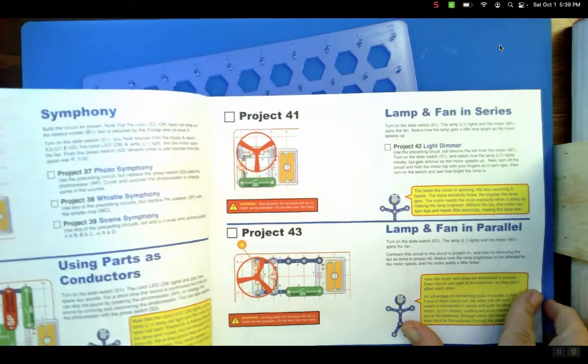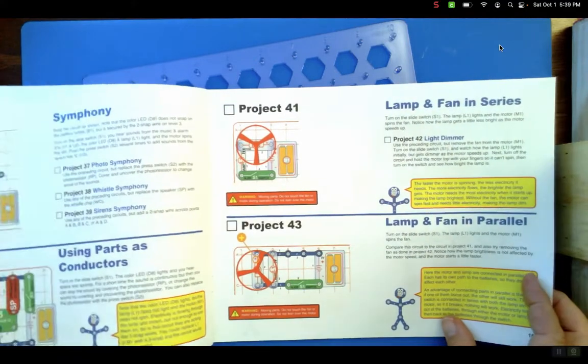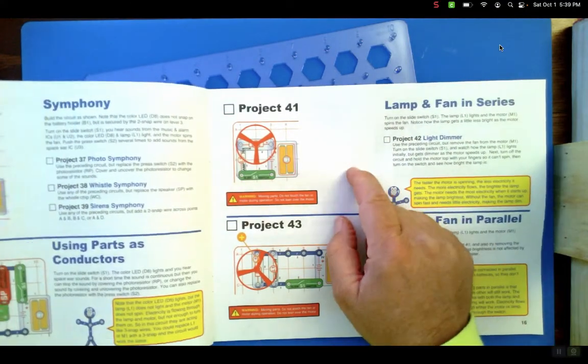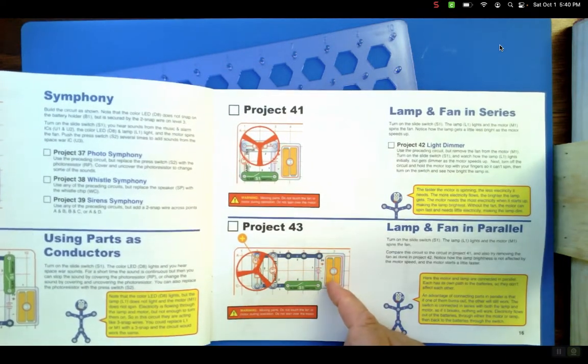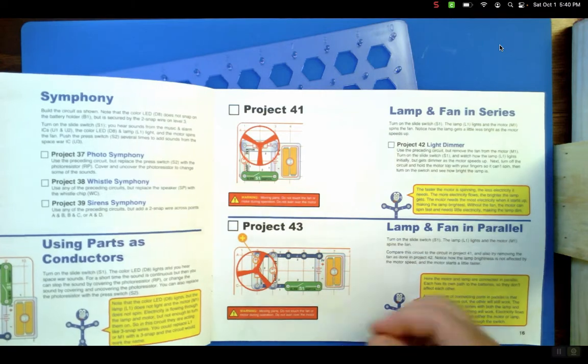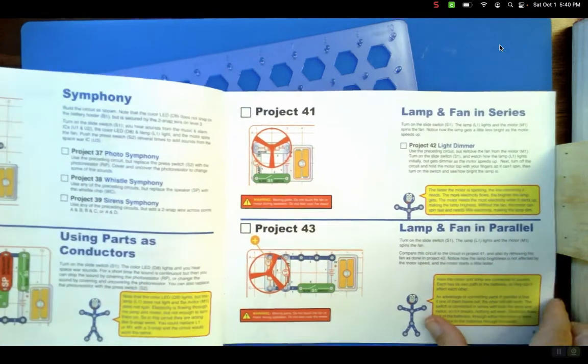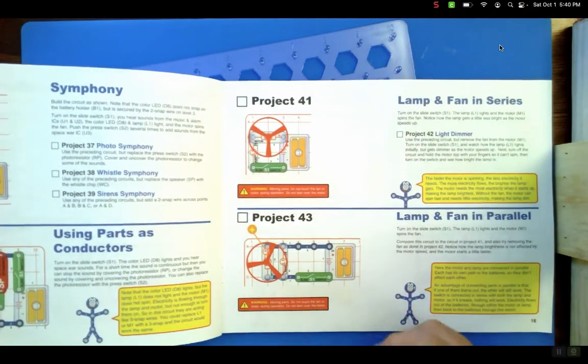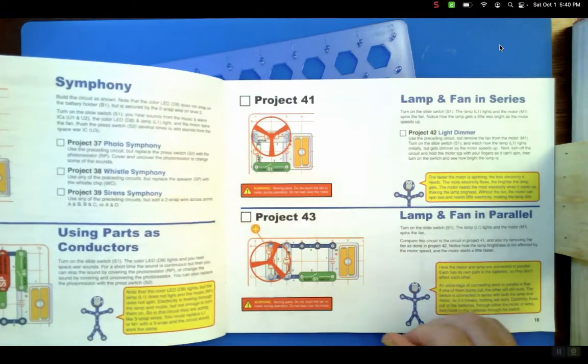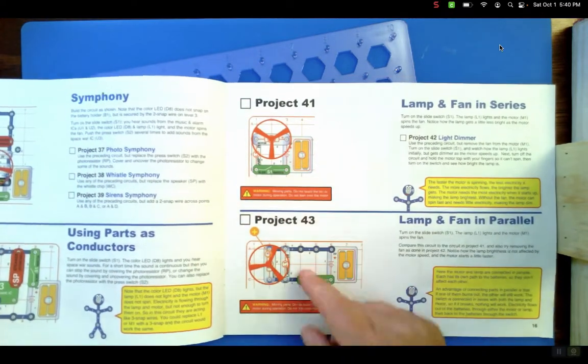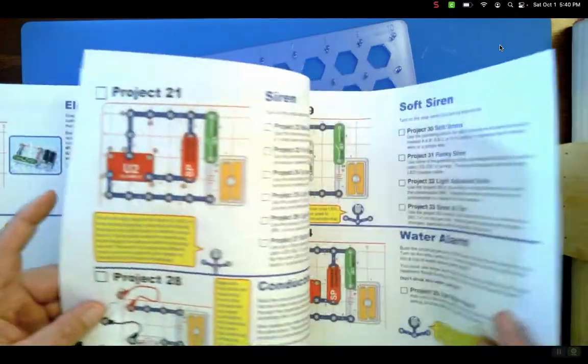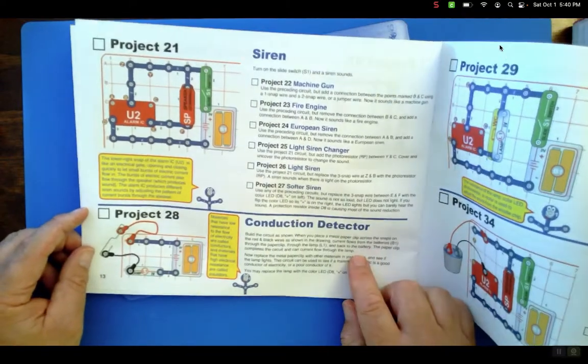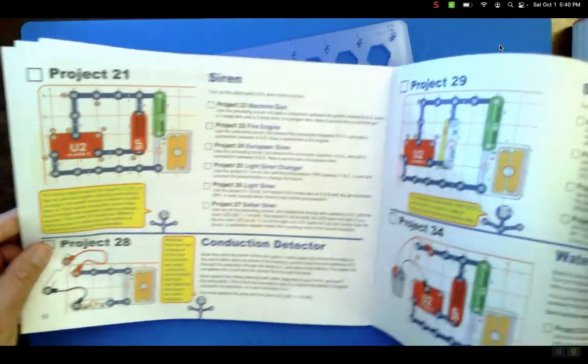The conduction detector is in the middle, which seems weird. They don't get to parallel circuits like lamp and fan in series until way later. I would have put all that first: go series, go parallel, put the indicator lamp in there one way, put the indicator lamp in there a second way, do that conduction detector thing so you can really experiment.